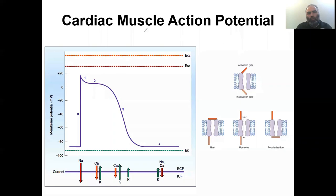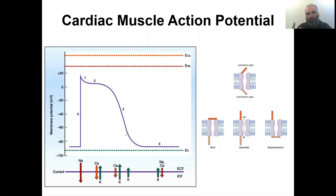Now let's talk about cardiac muscle action potential. You can see this very famous graph that you must have seen before. This graph depicts the electrical changes when a cardiac ventricular muscle is stimulated. A variation of this graph is also found in Purkinje fiber stimulation as well as atrial muscle stimulation.